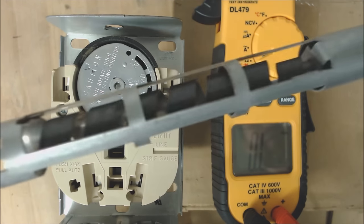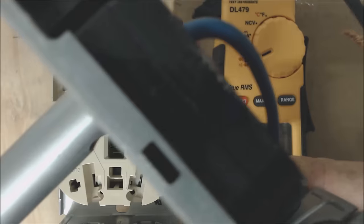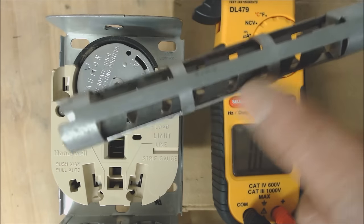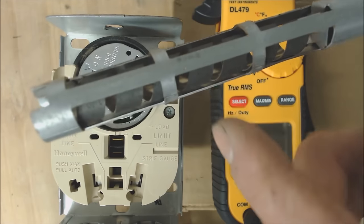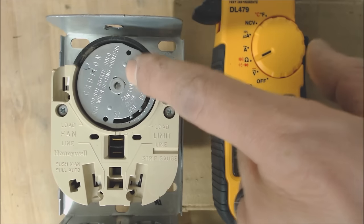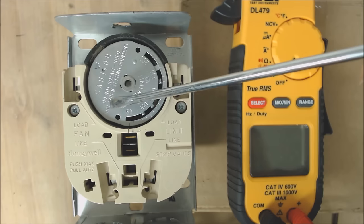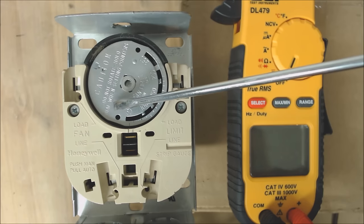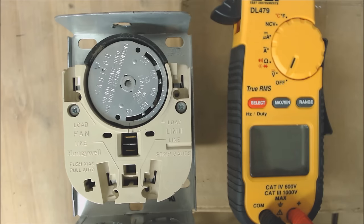Now if you look on the back of the fan limit control, it has this bimetal right here. As it heats up, it starts turning. As it turns, it rotates this dial. This rotates clockwise, and then when the ignition assembly shuts off, it turns counterclockwise.